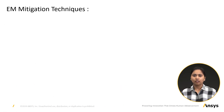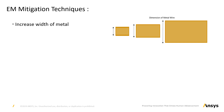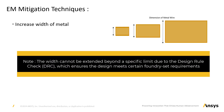Now let us discuss some electromigration mitigation techniques. Increase the width of the metal: if we increase the width of the conductor, it will decrease the current density, resulting in lesser EM. However, we cannot increase the width beyond a certain limit due to DRC rules. DRC, i.e. Design Rule Check, verifies if the design meets certain requirements set by the foundry, like the width of the metal or the space between two metals.